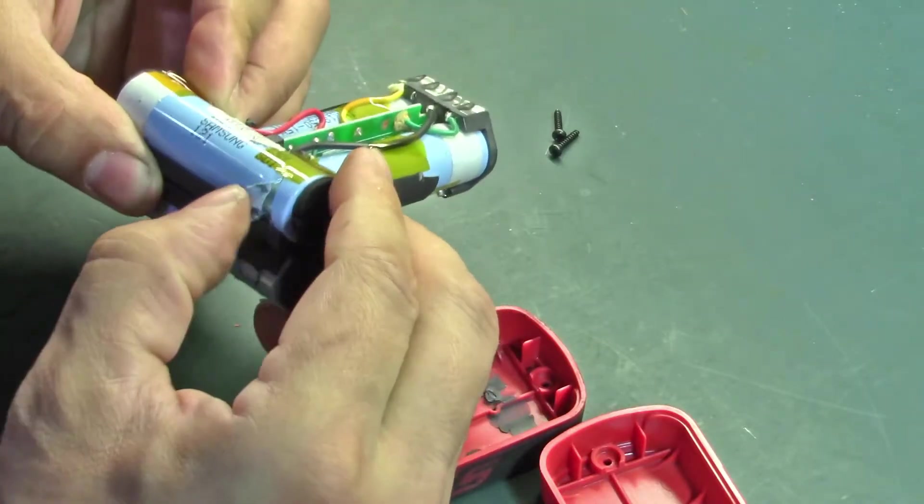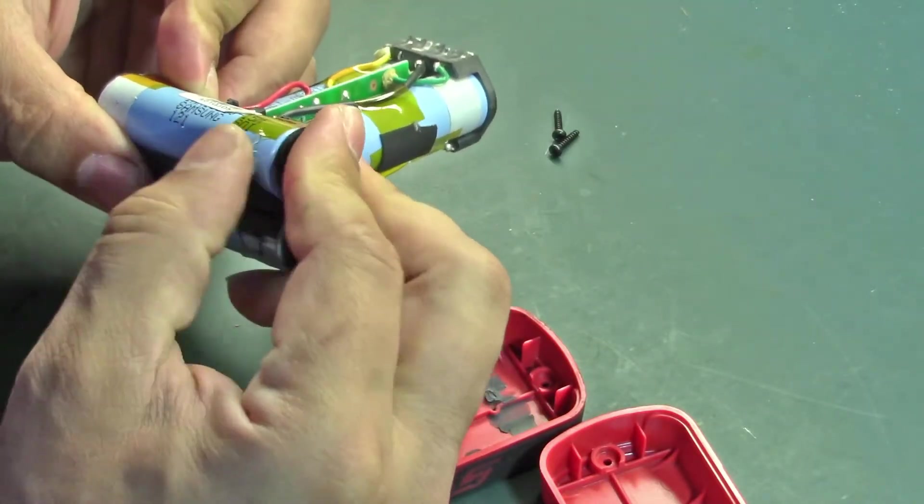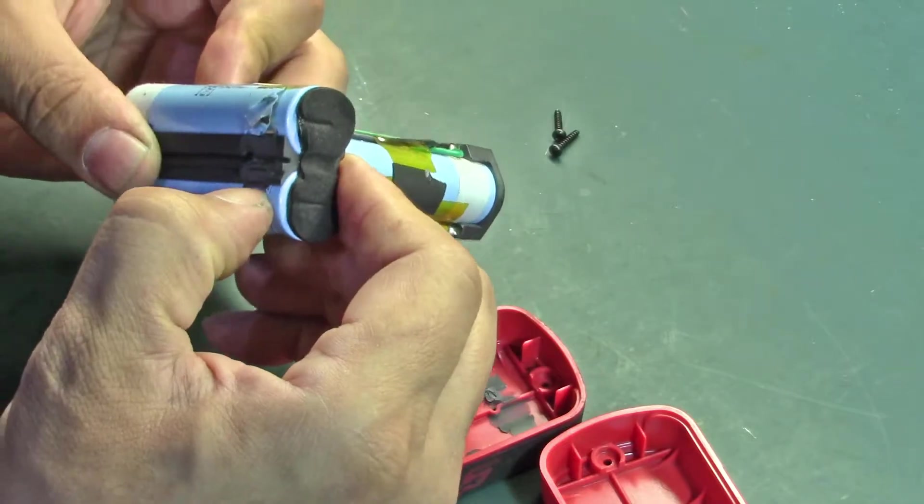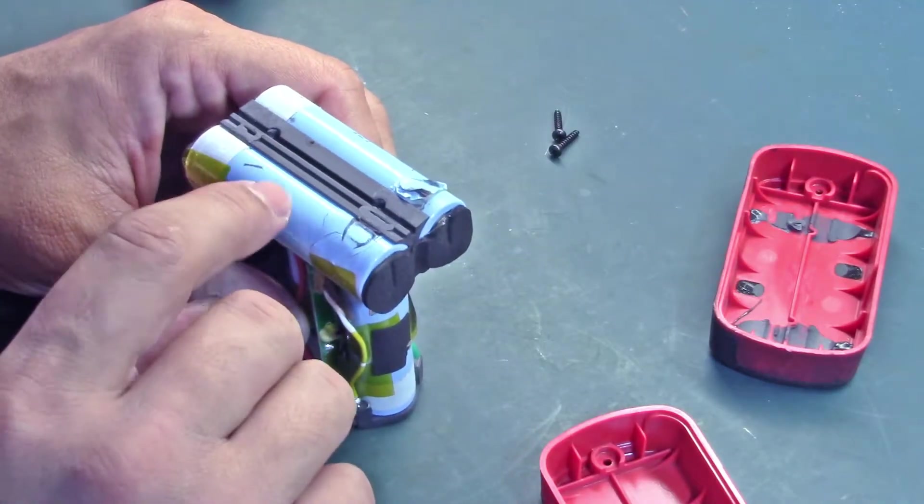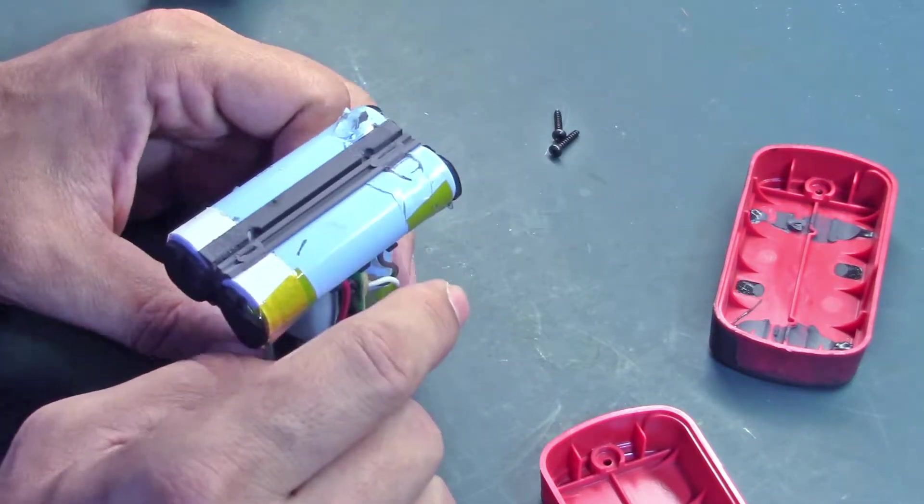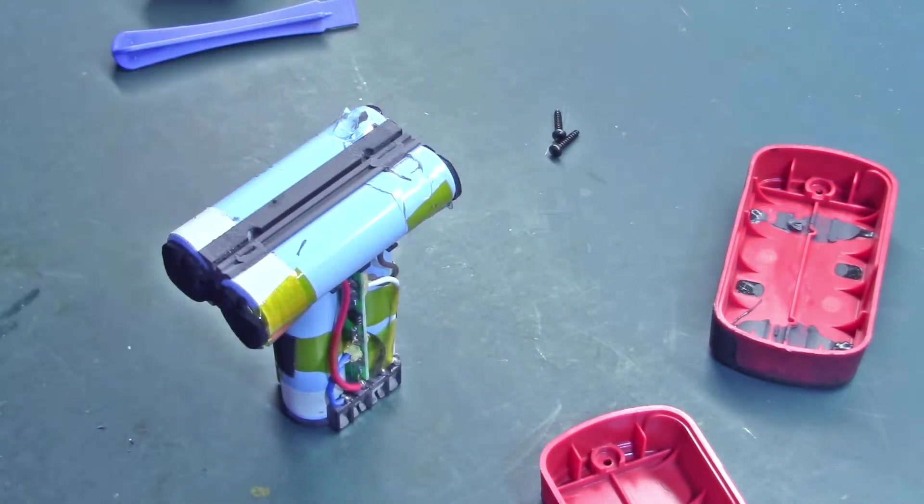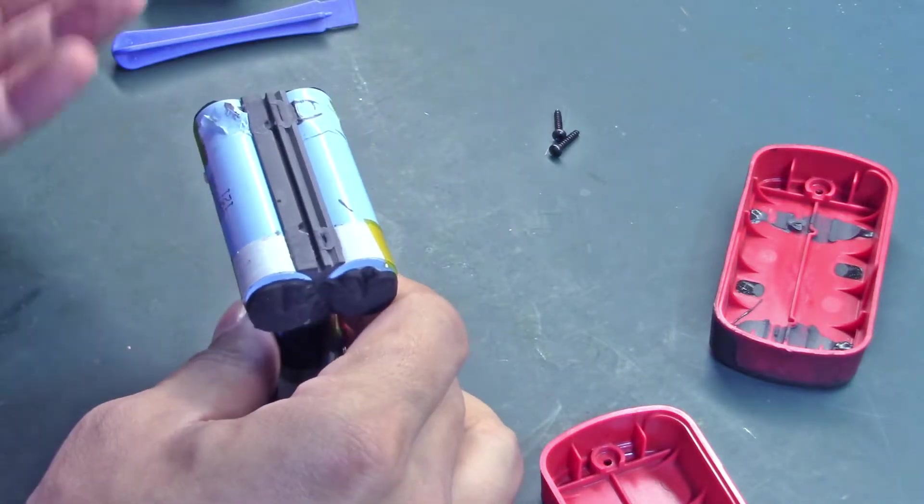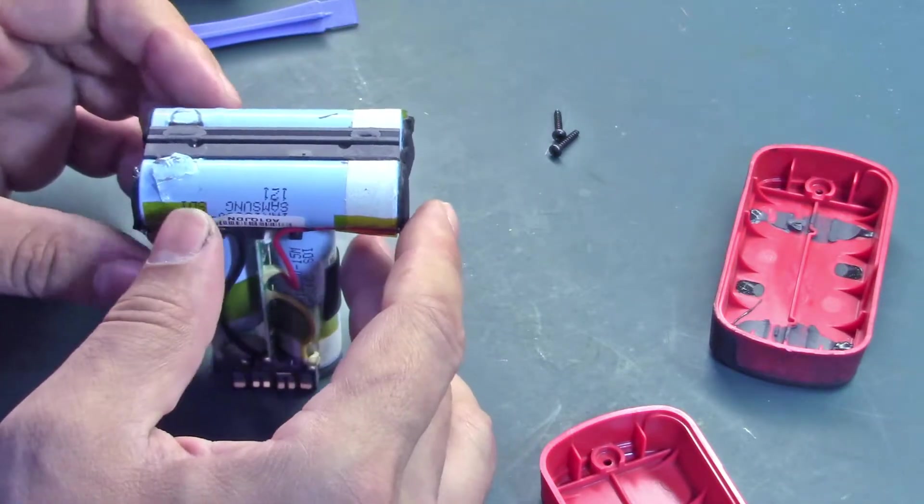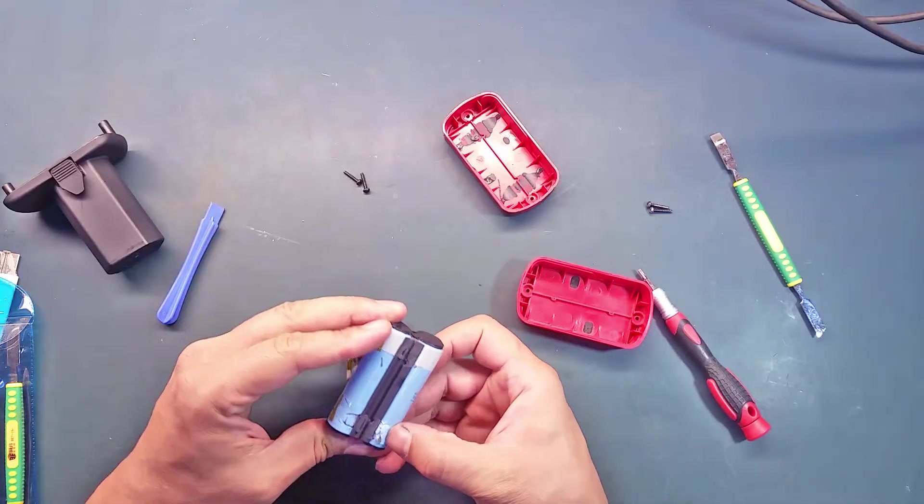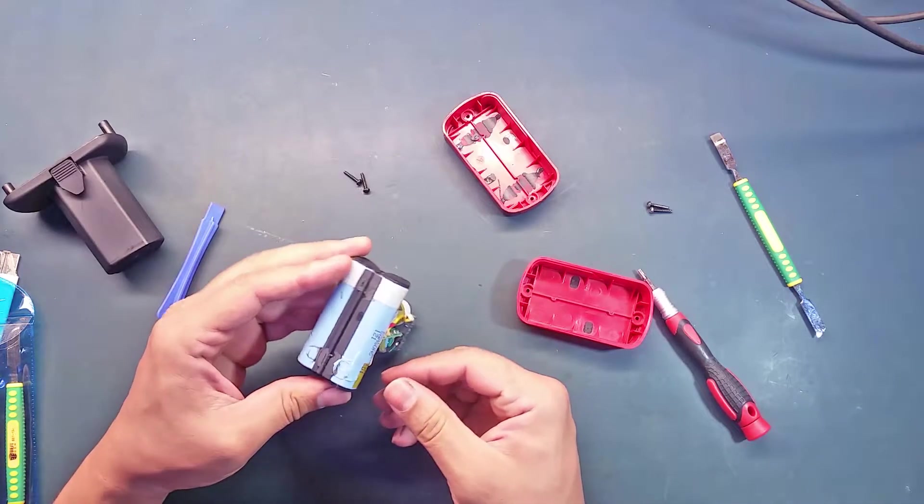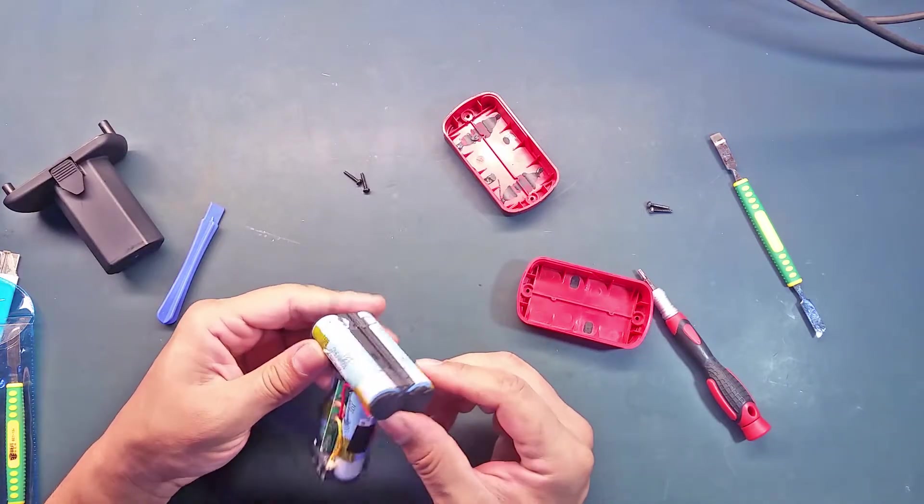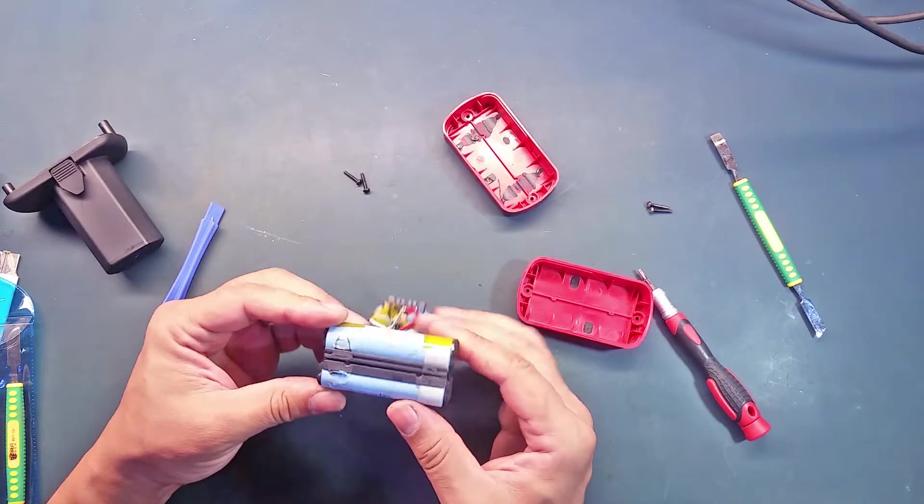What I think I'm going to do is just wrap the part that got damaged with Kapton tape. I don't think it's going to do any harm because the batteries are separated with these black separators.